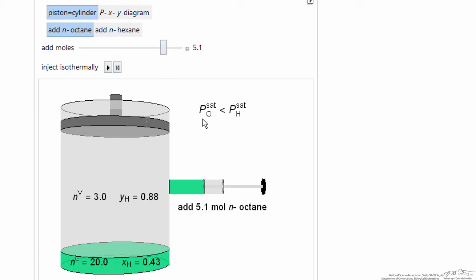The important thing to note is that the saturation pressure of octane is less than that of hexane, and so you should be able to first predict what's going to happen when I inject the normal octane into the system.